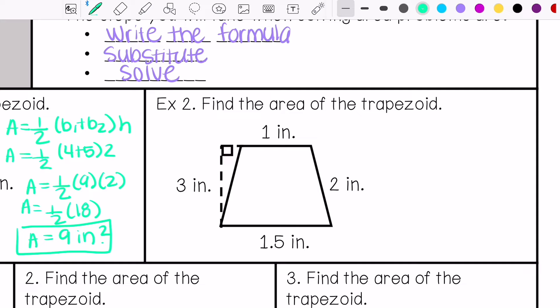Example number 2 says find the area of the trapezoid. I'm going to identify my bases, base 1 and base 2. My height right here makes my right angle with one of my bases. I'm going to write my formula and then substitute what I know.